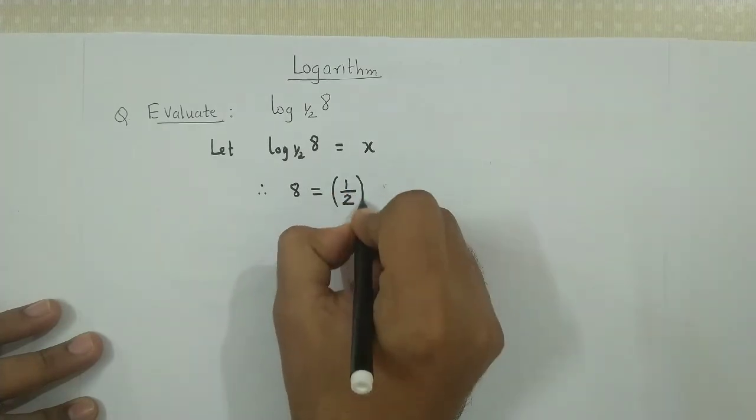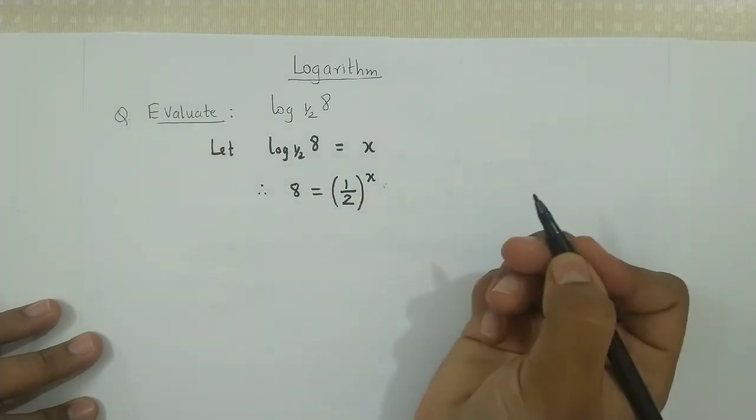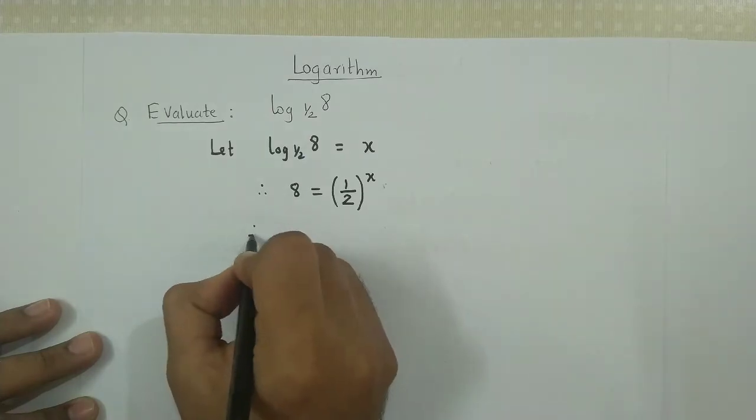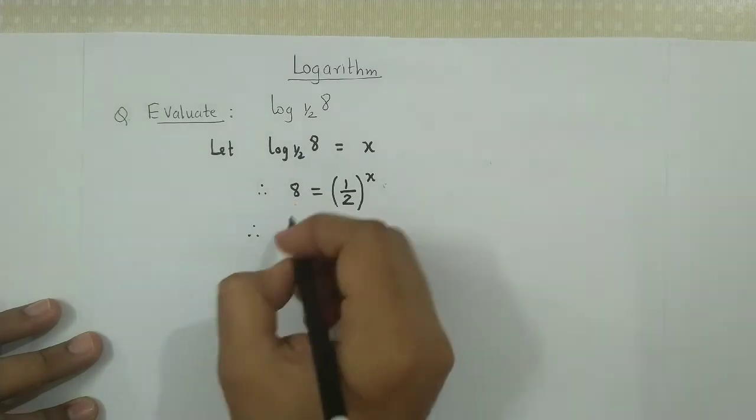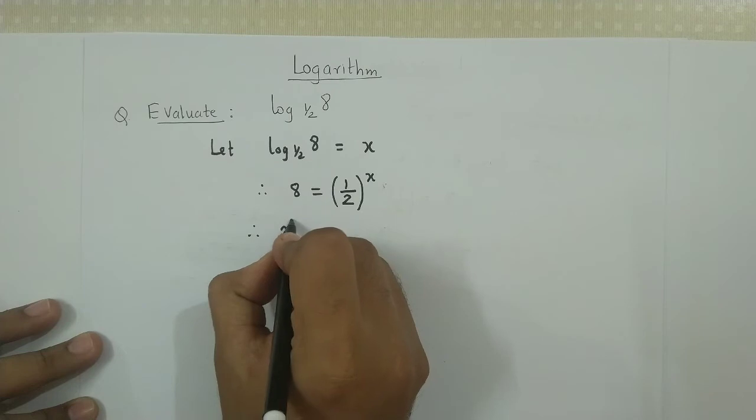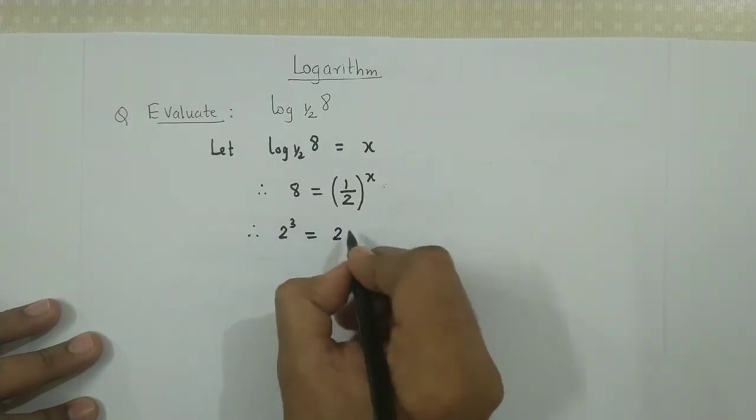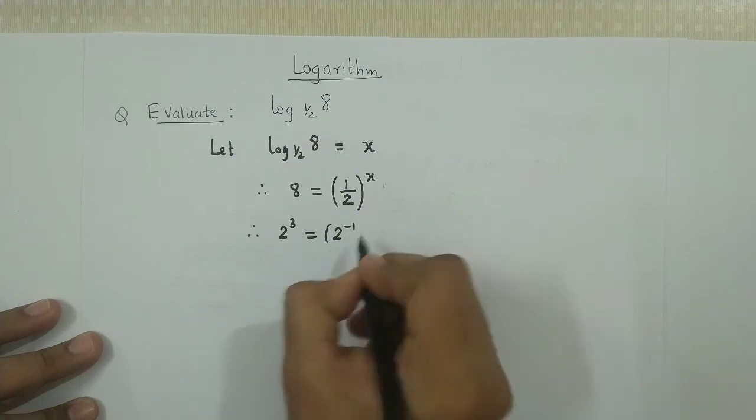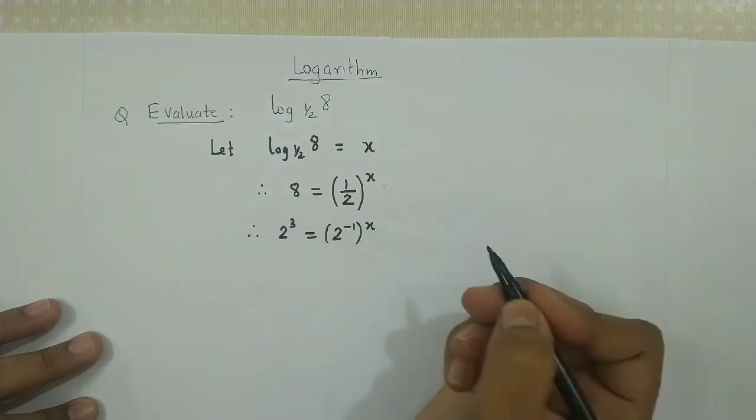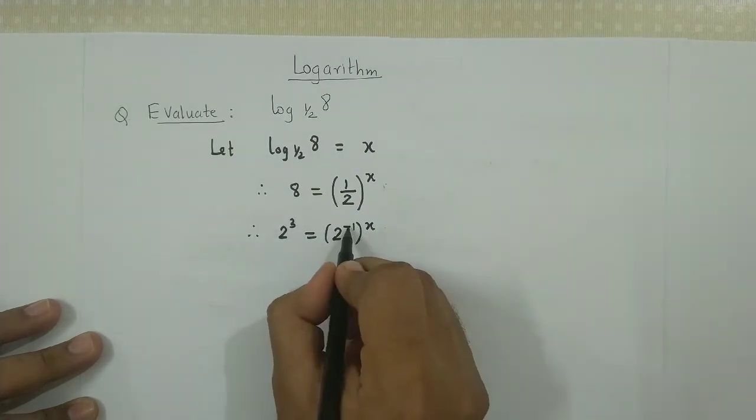Now, 8 can be expressed as 2³, and ½ can be expressed as 2^(-1). So we have (2^(-1))^x, and -1 times x gives -x. Therefore, 2^(-x) equals 2³.